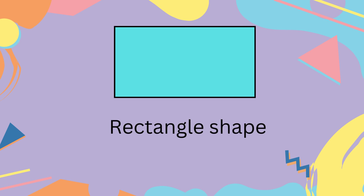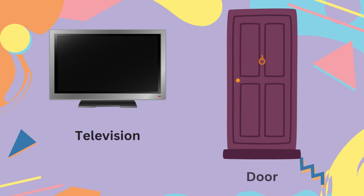It is a rectangle shape. Examples of a rectangle shape are a television and a door.